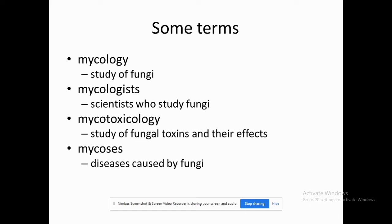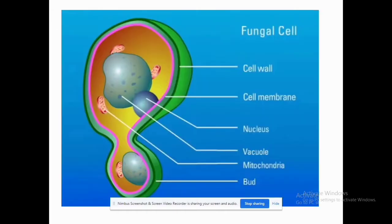Now that you are familiar with these terms, let's look at the overview of the fungal cell. The fungal cell, like other typical cells, contains a cell wall, cell membrane, nucleus, vacuole, and mitochondria. During reproduction it can also form spores.